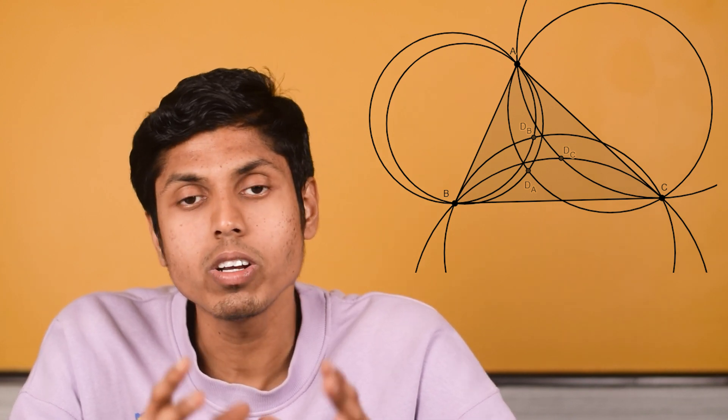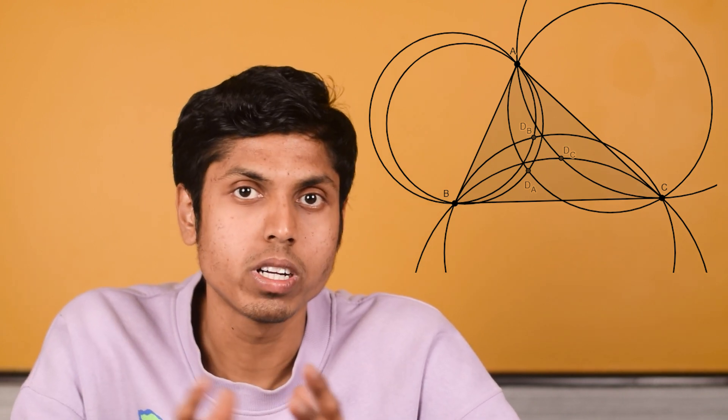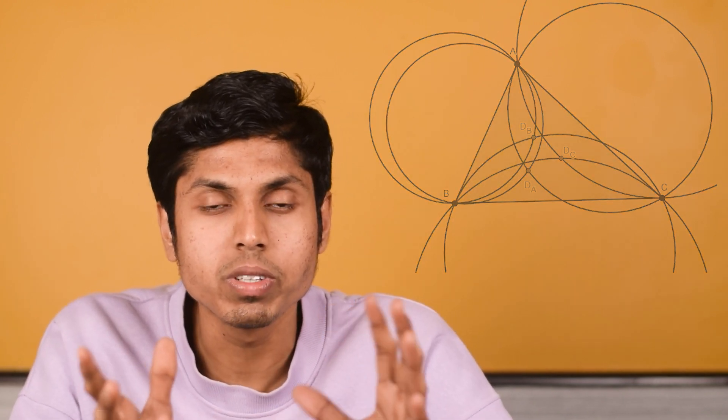There are three Dumpty Points in the triangle: A Dumpty Point, B Dumpty Point, and C Dumpty Point. We will look into one of those Dumpty Points and the properties will carry over for the other in a symmetric argument. Let's get started.